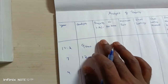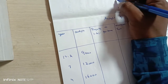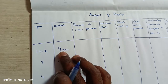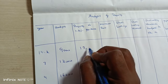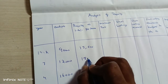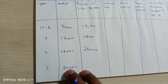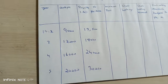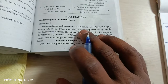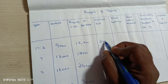The output multiplied by the royalty rate of Rs. 1.50 per ton gives us: 9,000 × 1.50 = Rs. 13,500; 12,000 × 1.50 = Rs. 18,000; 16,000 × 1.50 = Rs. 24,000; and 20,000 × 1.50 = Rs. 30,000. The minimum rent stated in the question is Rs. 20,000 per year.